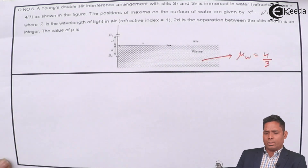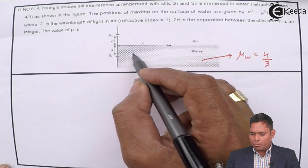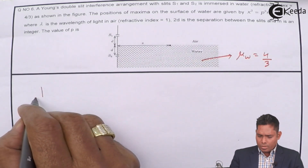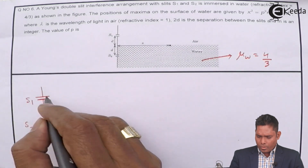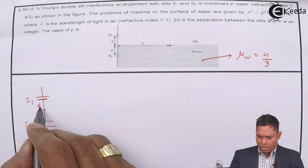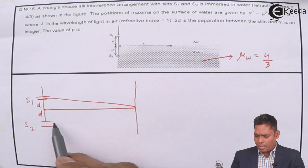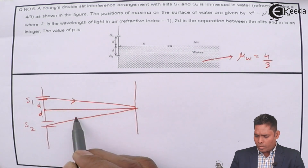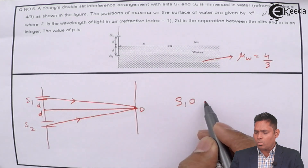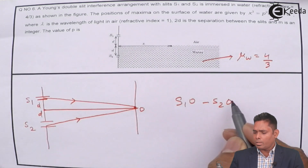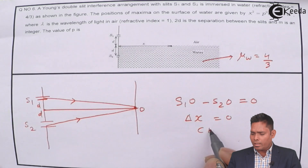If the water were not there, the midpoint would have been a central maximum. With S1 and S2 separated by 2D and the screen placed at the surface, the rays from S1 and S2 would meet at center O with path difference zero — that is the central bright fringe.